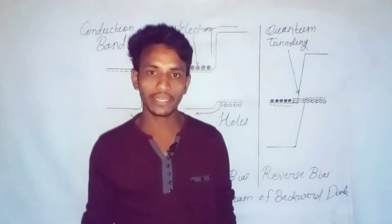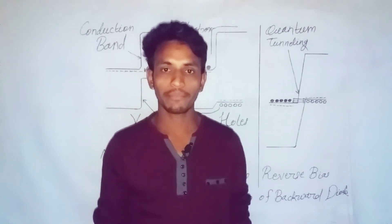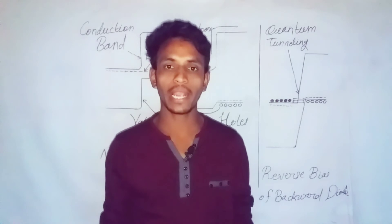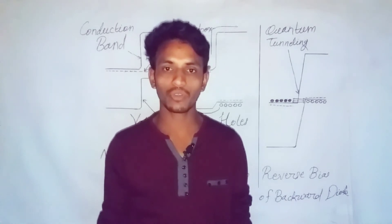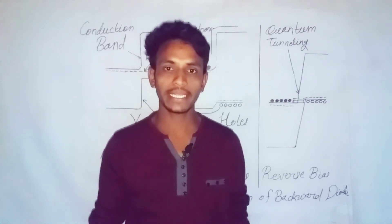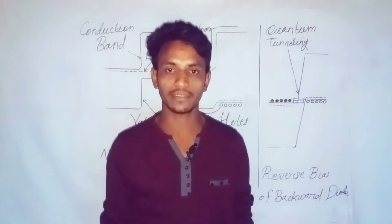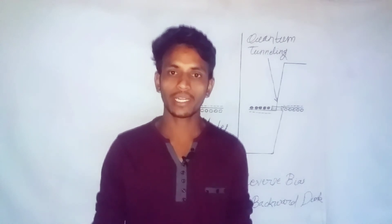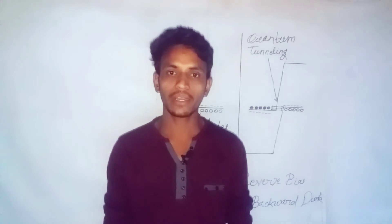Under no biased condition, the filled valence band is opposite to the filled conduction band. But when reverse biasing is applied to the semiconductor, the P region moves up with respect to the N region. The filled band in the P side is just opposite to the empty band at the N side. Thus the electrons start tunneling from the filled band in the P region to the empty band in the N region, so current flows even in reverse biased condition. When forward biasing is applied, the N side moves up with respect to the P side, and the filled valence band of the N-type semiconductor will be just opposite to the empty conduction band of P-type, so electrons flow from N-type to P-type.